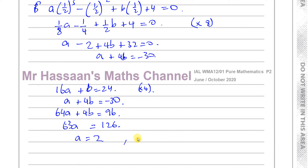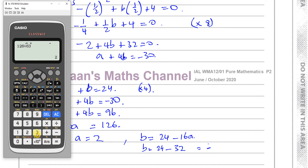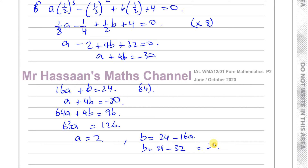Therefore, from 16a plus b equals 24, we get b equals 24 minus 16a, so b equals 24 minus 32, which gives b equals minus 8. So a equals 2 and b equals negative 8.